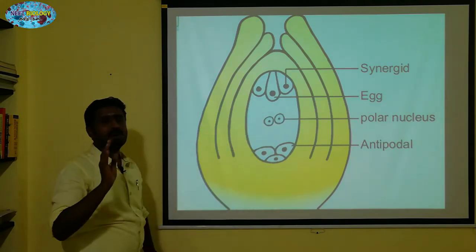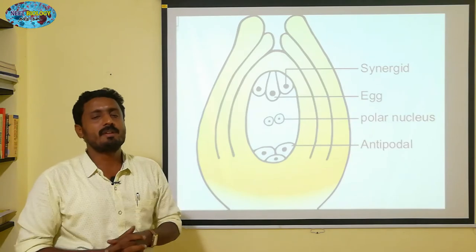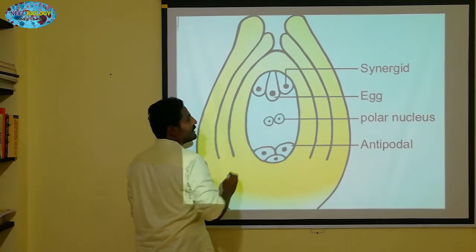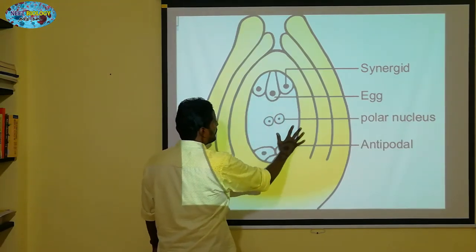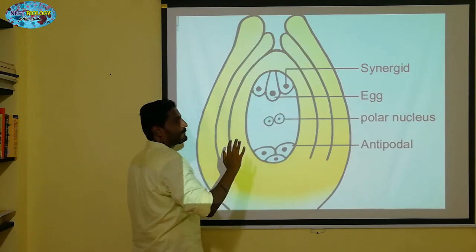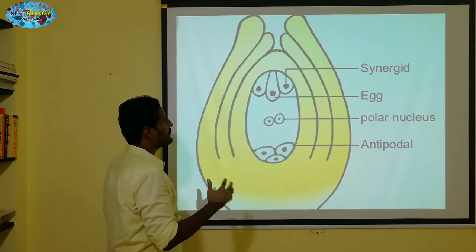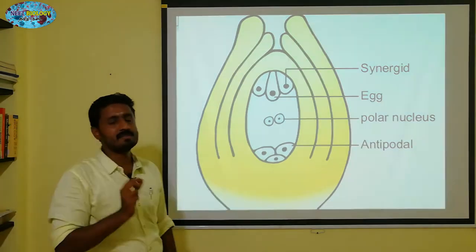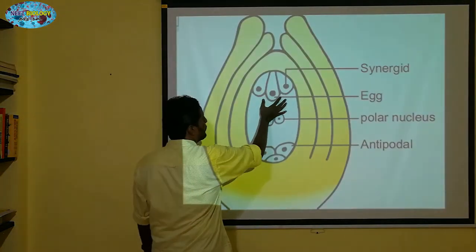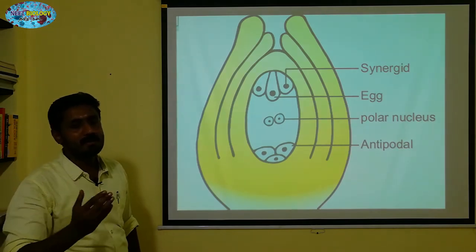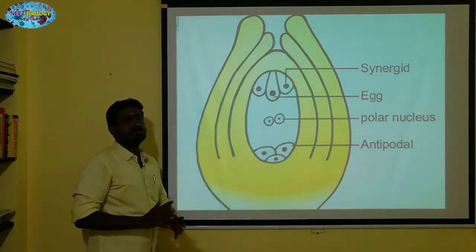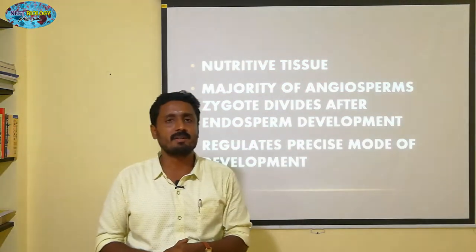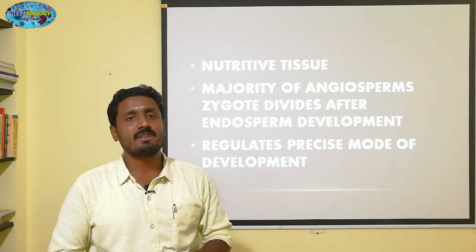The product of triple fusion is the endosperm. Endosperm is a nutritive tissue — it is a plant tissue. After the development of endosperm, it is present inside the embryo sac and provides nutrition for the growing embryo.